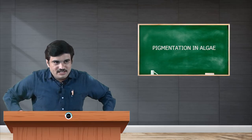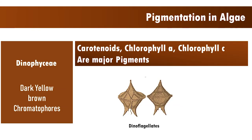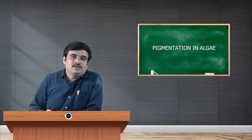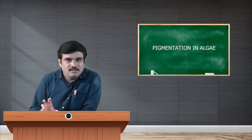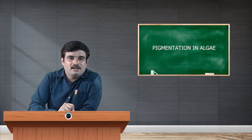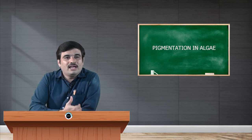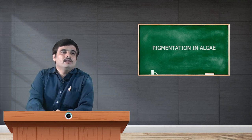Dinophyceae has dark yellow-brown chromatophores due to carotenoids, chlorophyll a, and chlorophyll c. Dinoflagellates, which have recently been moved out of the plant kingdom in modern classification, are still included under algae in the Frisch system, and they possess chlorophyll a and chlorophyll c.